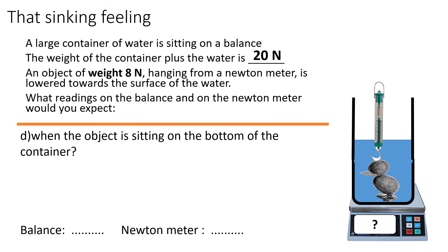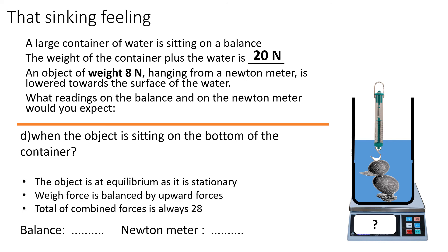The last scenario is that the duck sinks all the way to the bottom of the container and just sits there. When it sits there, the Newton meter reads 0. The reason is that the combined forces acting upwards — not just upthrust, but other forces too — are equal to the weight force acting downwards. The downward forces combined were 20 Newtons for the water and container plus 8 Newtons for the metal duck, giving 28 Newtons in total. So the balance reads 28 Newtons and the Newton meter reads 0 Newtons.